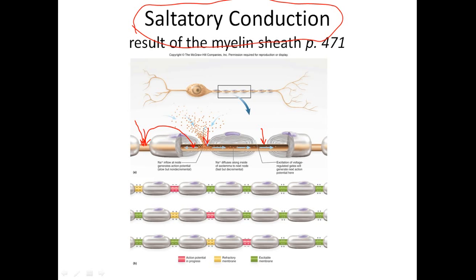The action potential hops from node to node very quickly through the myelinated sections. A new action potential is generated at every node. Think of it like hitting a speed power-boost button in a video game — it goes from node to node, speeding up the transmission of the signal down the axon.